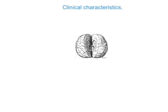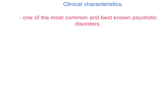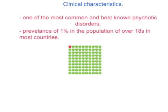Clinical Characteristics. The term schizophrenia originates from the Greek for 'split mind.' Bleuler, who first coined the term, wanted to convey the fragmented nature of thinking that occurs in people with schizophrenia. But it is important that you do not confuse it with the quite distinct diagnosis of multiple personality disorder, also known as split personality. It is one of the most common and best known psychotic disorders. In most countries around the world, the prevalence of schizophrenia is about 1% in a population that is over 18 — that is, 1 in 100 people have schizophrenia.